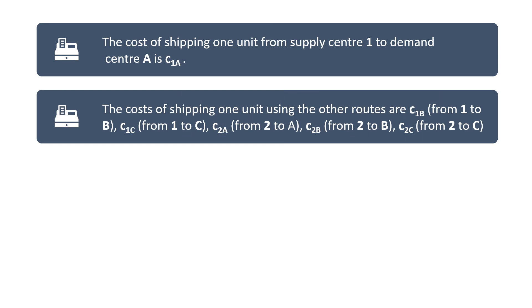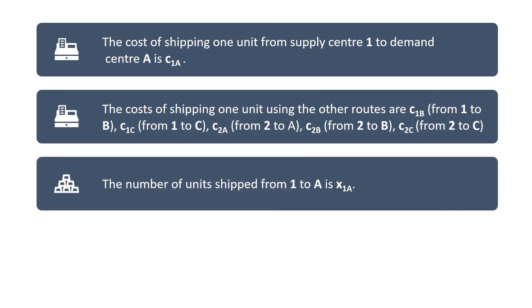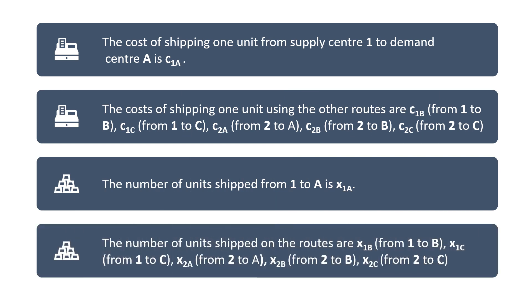In terms of notation, we will use C1A to denote the cost of shipping one unit from supply point one to demand center A. Similarly, C1B is the unit cost of shipping on the route from one to B, and C1C from one to C. The number of units that can be shipped on the route from one to A is denoted as X1A, and X1C represents the number of units that can be shipped on the route from one to C.